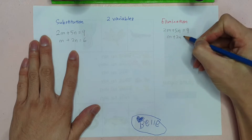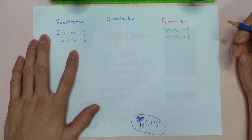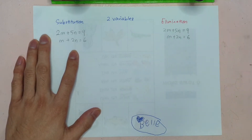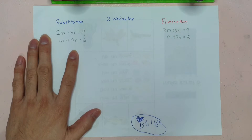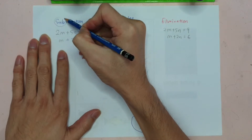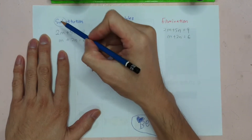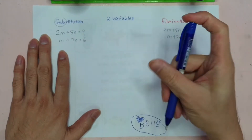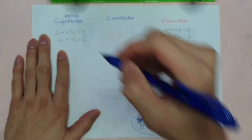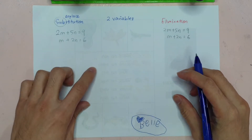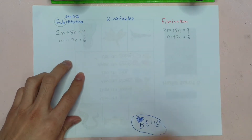I'll be solving using the substitution method first. You'll use substitution in Form 4 and Form 5 mathematics. What is the meaning of substitution? Look at the word 'sub.' Sub means replace — or in BM, 'ganti.' We're going to replace something.